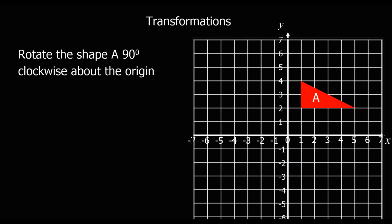This question is asking us to rotate shape A 90 degrees clockwise about the origin. The origin, firstly, is this point here, zero, zero. That's the origin.